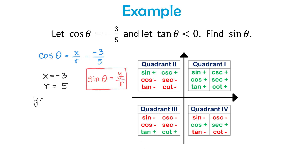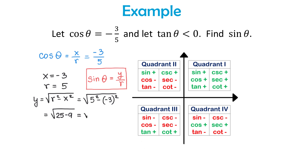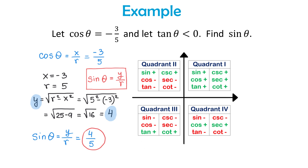We need to find sine of theta, and in quadrant 2 sine will be positive. By definition, sine of theta is y divided by r. To find y, we use the Pythagorean theorem: y equals the square root of r squared minus x squared. Replacing, we get the square root of 5 squared minus negative 3 squared, which is the square root of 25 minus 9, giving the square root of 16, which equals 4. So y is 4, and it is positive because in quadrant 2 sine is positive. Therefore, sine of theta equals y over r equals 4 over 5.